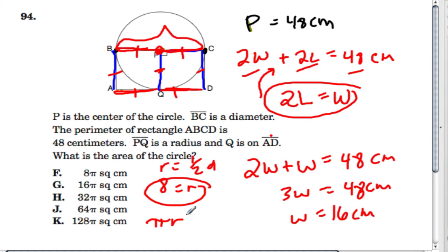We use the formula pi r squared to find the area of our circle, which is pi times 64, 8 squared, and there it is right there, 64 times pi.